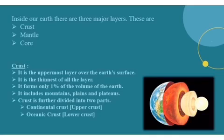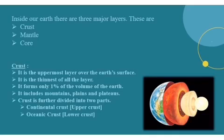We will study in detail about the crust. Crust is the uppermost layer over the earth's surface. It is the thinnest of all the layers. It forms only 1% of the volume of the earth. It includes mountains, plains, and plateaus. Crust is further divided into two parts.